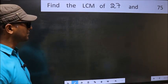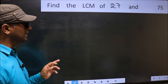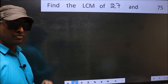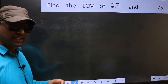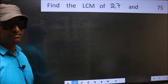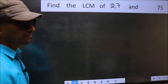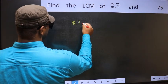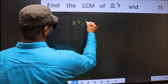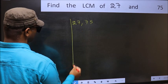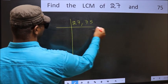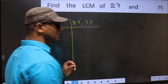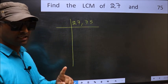Find the LCM of 27 and 75. To find the LCM, we should frame it in this way: write down 27 and 75. This is step 1.